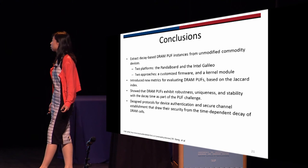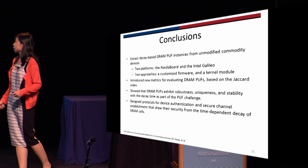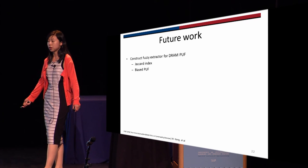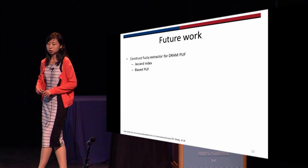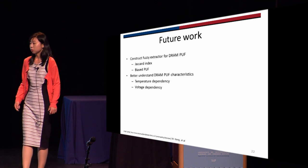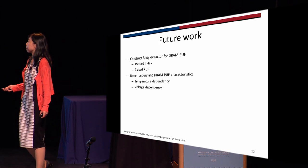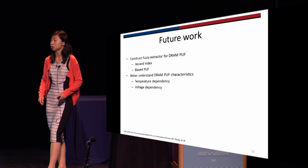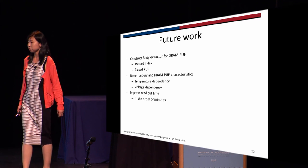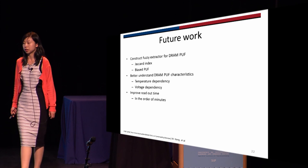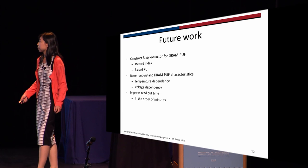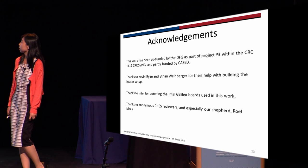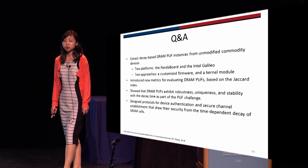We also showed protocols for device authentication and secure channel establishment that draw security from the DRAM PUF. For future work, it will be interesting to construct a fuzzy extractor for the DRAM PUF, as it is a very biased PUF and we use the Jaccard index rather than Hamming distance. It will also be interesting to better understand DRAM PUF characteristics — for example, over a bigger temperature range and voltage dependency, since with commodity devices it's hard to control only the DRAM module voltage. The readout time is a drawback of the DRAM PUF — it's on the order of minutes — though it depends on the use case and we are trying to improve it.